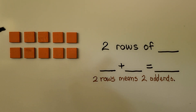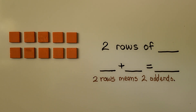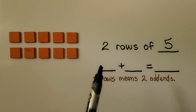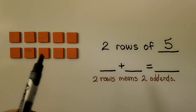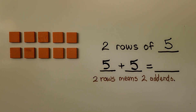Here we have 2 rows and there are 1, 2, 3, 4, 5 in each row. We have 2 rows of 5. 2 rows means we're going to have 2 addends. There are 5 in each row, so each addend will be a 5. Do you know 5 plus 5? If you said 10, you're right.